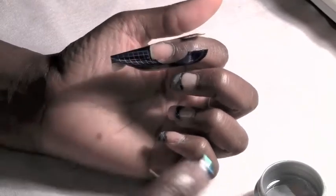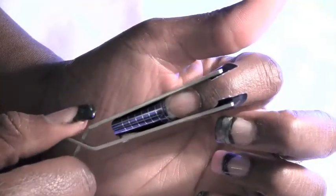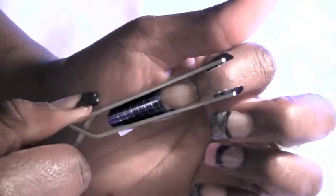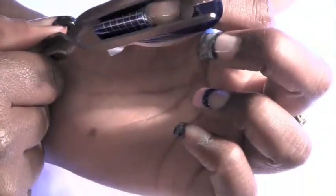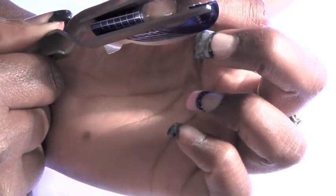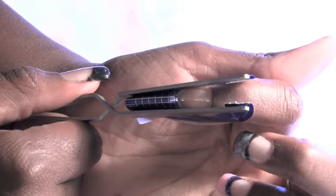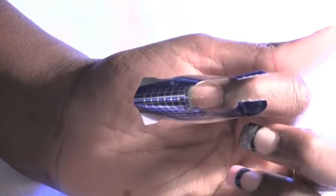Once that is cured then we're going to create our C curvature. You're going to use the magic wand which is a C curvature and you're going to squeeze and create the shape of your nail. This just helps create a beautiful C curve. You don't want to cure the gel for too long because you want it to be pliable. So 10 seconds is about right.